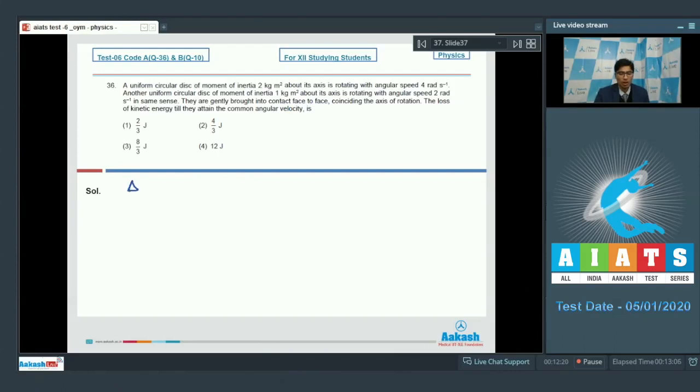Dear students, the loss in kinetic energy can be found out using the formula half i1 i2 divided by i1 plus i2 into omega 2 minus omega 1 square. Herein i1 is equal to 2, omega 1 is equal to 4, i2 is equal to 1 and omega 2 is equal to 2.